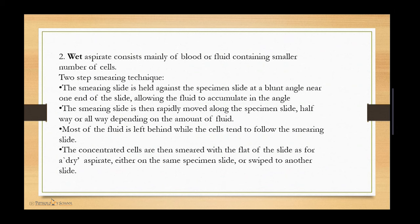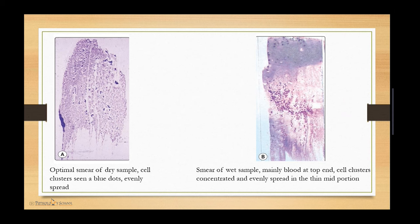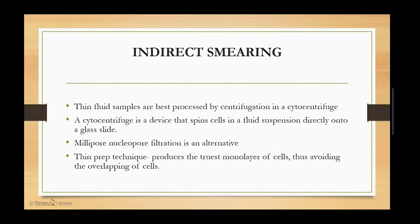A wet aspirate mainly consists of blood or fluid containing a small number of cells and uses a two-step smearing technique. The smearing slide is held against the specimen slide at a blunt angle near one end, allowing the fluid to accumulate in the angle. The smearing slide is then rapidly moved along the specimen slide, leaving most fluid behind while cells follow the smearing slide. The concentrated cells are then smeared with the flat of the slide, either on the same specimen slide or transferred to another slide.